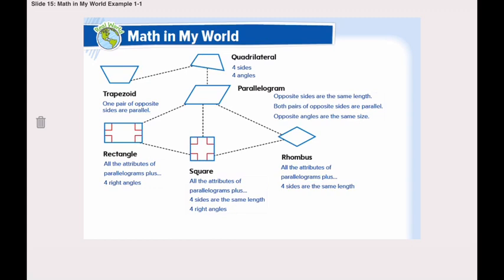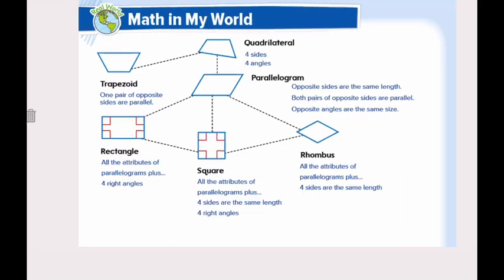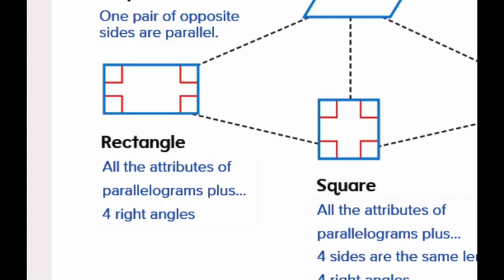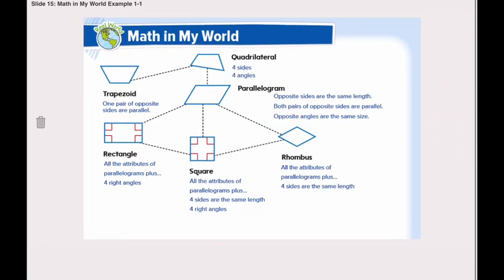What attributes are shared by both rectangles and squares? Let's take a look at the rectangle. It has all the attributes of a parallelogram. What are the attributes of a parallelogram? Opposite sides are the same length, both pairs of opposite sides are parallel, and opposite angles are the same size. So a rectangle has all three attributes plus four right angles.